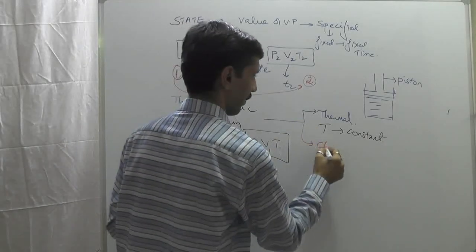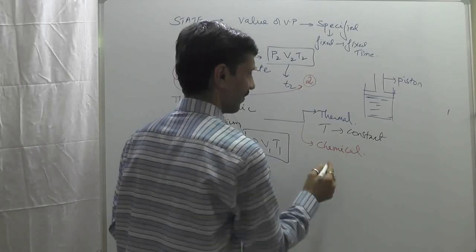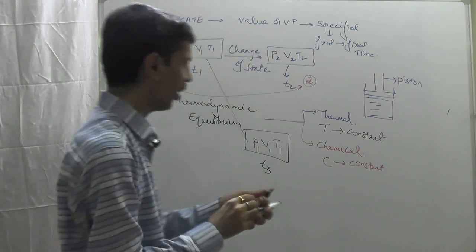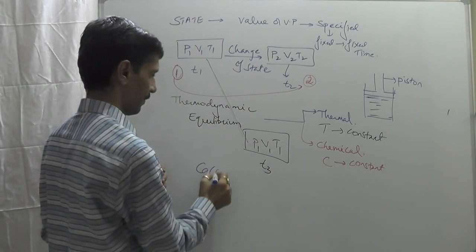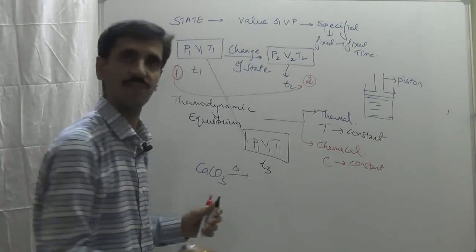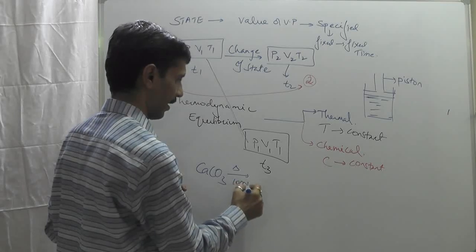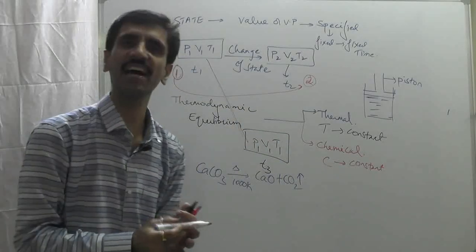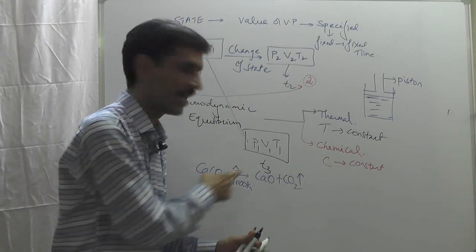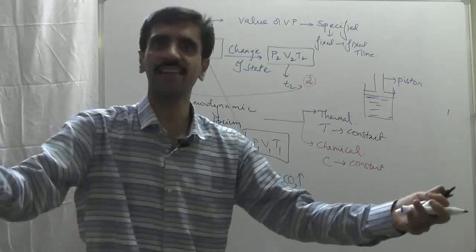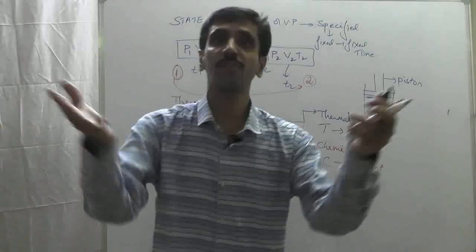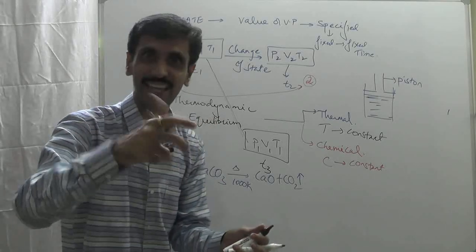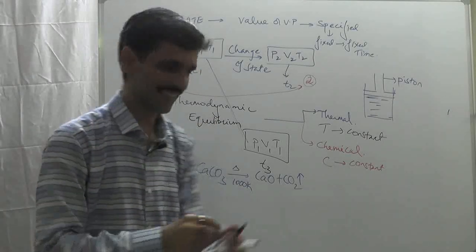Next is chemical equilibrium. From the name: concentration remains constant. For example, calcium carbonate, when heated at a temperature of around 1000 Kelvin, decomposes into calcium oxide and carbon dioxide. The carbon dioxide gas escapes into the surroundings, so the system had calcium carbonate and now has calcium oxide — there is a change in chemical composition.